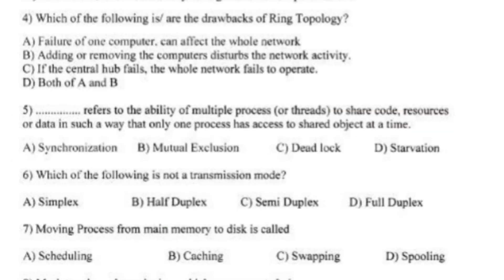Which of the following are the drawbacks of ring topology? Write optional C — if the center hub has failed, the whole network fails to operate.